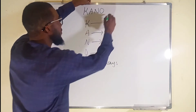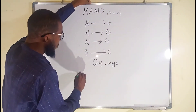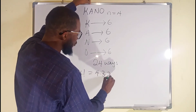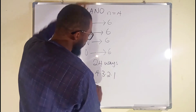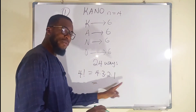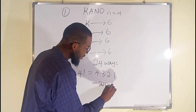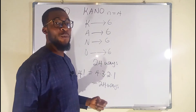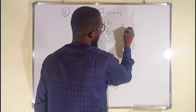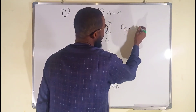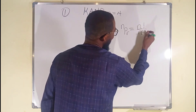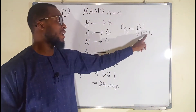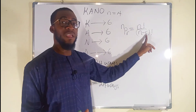Therefore, for Kano, since N is equal to 4, we have 4 factorial, which is equal to 4 multiplied by 3 multiplied by 2 multiplied by 1. That is 4 times 3 is 12, times 2 is 24, times 1 is 24 different ways. We can also apply the formula: N permutation R equals N factorial divided by (N minus R) factorial. This time around, both N and R are equal because we are taking all letters at a time.